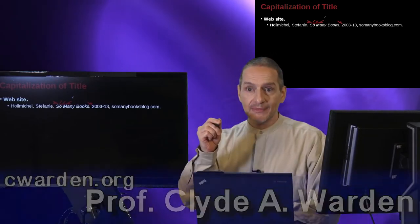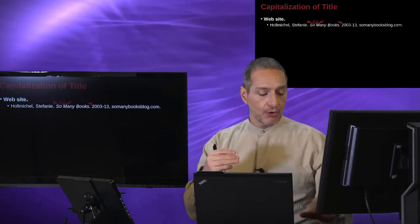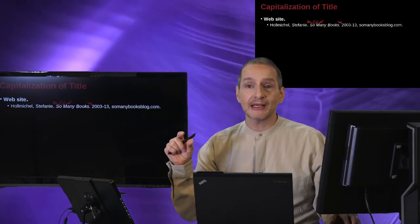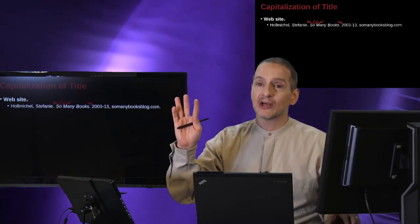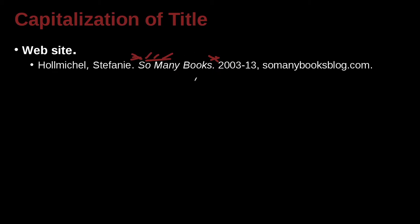That looks like the name of a blog on a website. So there's a website, and that site is called So Many Books. That's the whole site. And this site could have hundreds or thousands of posts, and those posts are small pieces. In this case, we're not citing one piece — we're citing the whole thing. And when was that site being posted to? 2003 to 2013. And what is the site's address? Here we cite the address. We do not have the HTTP colon slash slash — we don't do that. We just have the address by itself, independent.